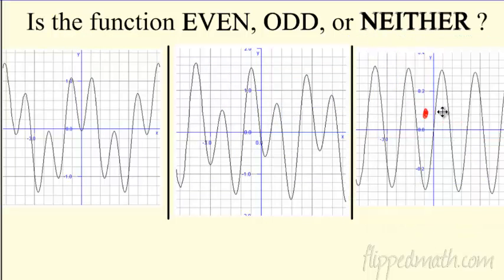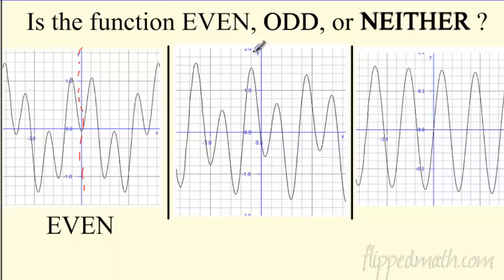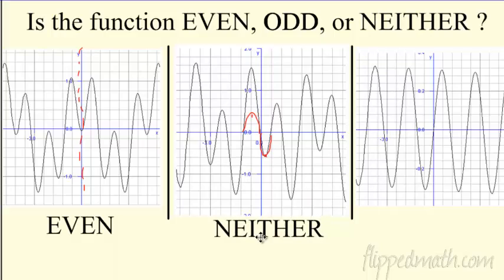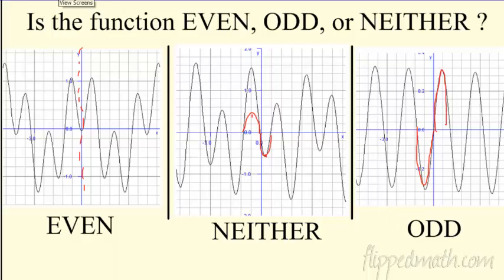So let's clear these out and look at the real graphs. Number one is definitely even — if you draw the dotted line, it flips, it's a mirror image. That is definitely even. Number two is kind of tricky — it's not symmetric around the Y-axis, and if I spin around the origin, it would end up down here. So this is the neither. Number three — this piece, if you rotate it, becomes this piece. So that is definitely the odd function. Even, neither, odd — fantastic.